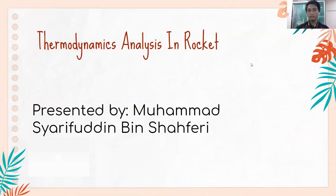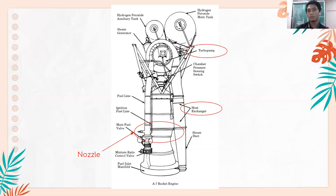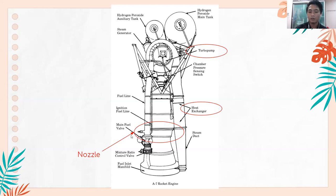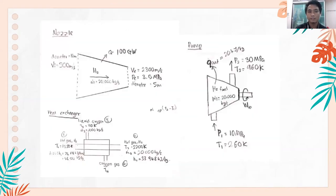Hi, assalamualaikum. My name is Mohammad Sharifuddin bin Syafiri and my metric number is 204304. I am going to explain about the thermodynamic analysis in rocket. As we learn in thermodynamics, we can determine the parameters of a fluid given some other parameters. For example, if we know the pressure and temperature of a fluid, we can find its specific density, specific volume, and enthalpy. In a rocket engine, we have the pump, heat exchanger, and nozzle as the main components to analyze.